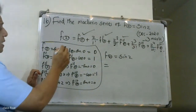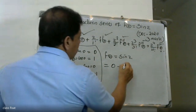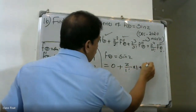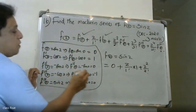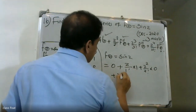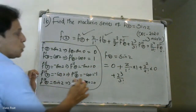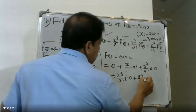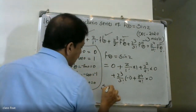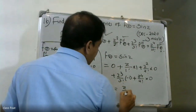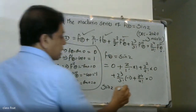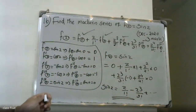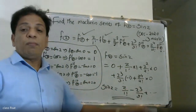Substituting into the Maclaurin formula: f of 0 equals 0, plus z by 1 factorial times f dash 0 which is 1, plus z squared by 2 factorial times 0, plus z cubed by 3 factorial times minus 1, plus z to the 4 by 4 factorial times 0. This gives the Maclaurin series expansion: z by 1 factorial minus z cubed by 3 factorial plus etcetera.